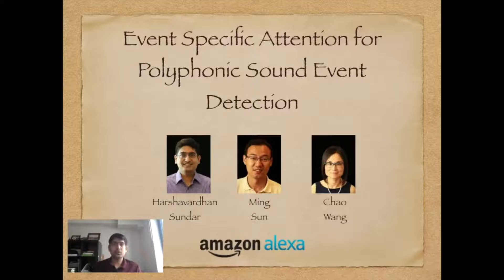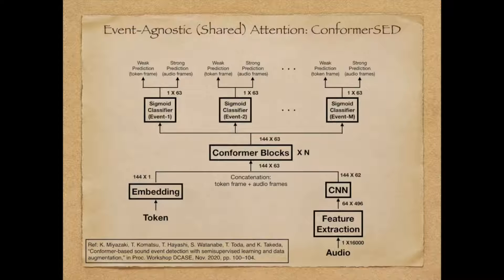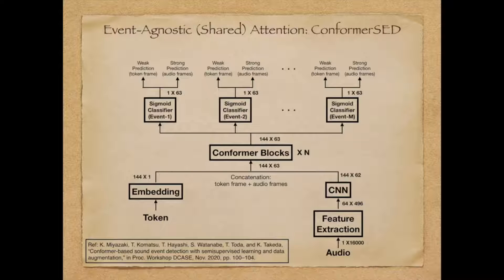In this work, we explore having self-attention layers separately for the detection of each sound event in a polyphonic sound event detection task. The idea behind one of the state-of-the-art techniques for sound event detection called Conformer-SED is to have convolutional transformer blocks with self-attention to generate a common representation, which is then used by each of the simple event-specific sigmoid classifiers for event detection.